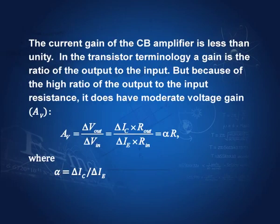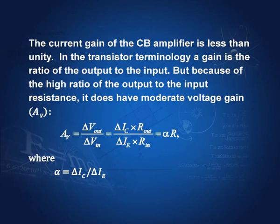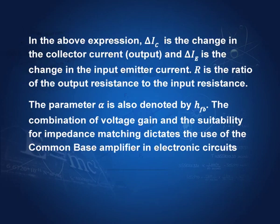By impedance matching, we effect the most efficient power transfer — that is the use of the common base amplifier. The voltage gain AV is delta Vout divided by delta Vin, which can be written as delta IC times the output resistance divided by delta IE times the input resistance. The current gain delta IC by delta IE of the common base amplifier is called alpha, and R is the ratio of output resistance to input resistance. So the voltage gain is alpha times R. The parameter alpha is also denoted as HFB in some books.